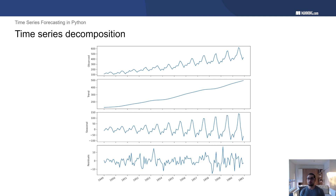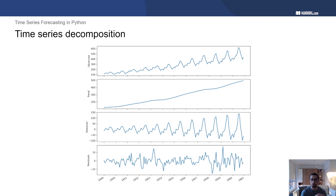Here's an example of time series decomposition. At the very top, we have the observed dataset — your time series data as you would see it. In this case, it is the number of monthly air passengers. Then we decompose the time series into its components. The second plot shows the trend — as you can see, we have a time series that over the long term is increasing over time, and the trend component confirms this.